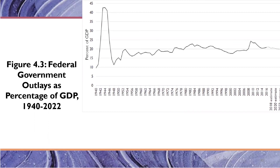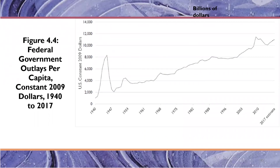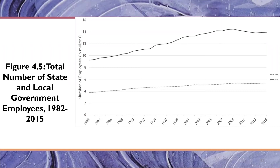A similar trend appears with federal government outlays per capita in constant dollars — a big blip during World War II and a big blip during the 2008 recession into the early 2010s. Federal employment hadn't really grown that much, but the question is whether the slack was picked up by state and local government. Local government employment grew considerably during the 1980s into the 2000s and then started to decline a little bit during the economic crisis after the 2008 market crash and recession. There's been slow but steady growth in local government as well as people place more demands on government.